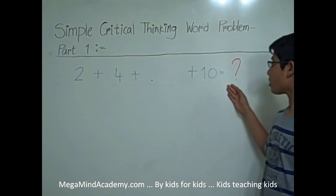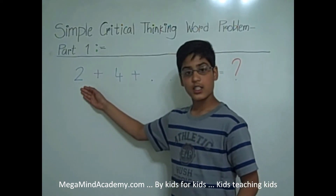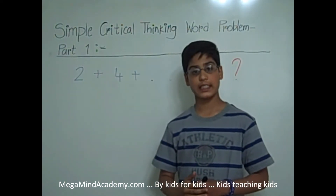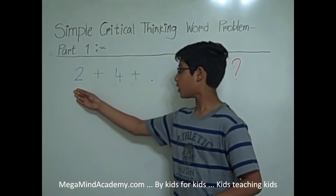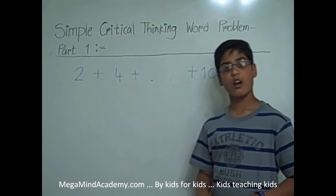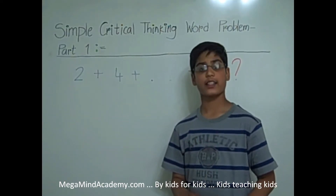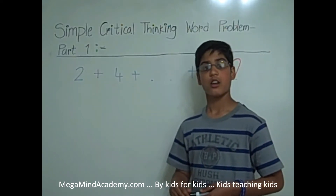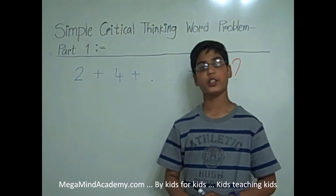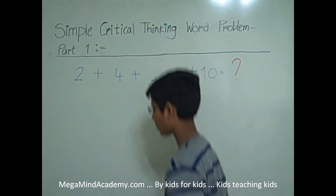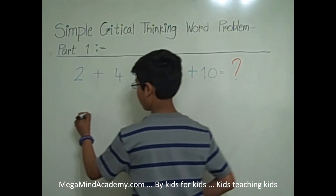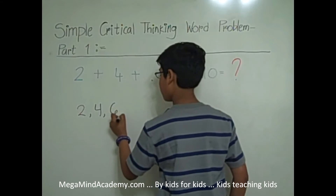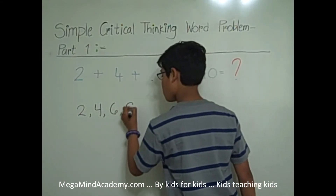In this problem, you can see that the smallest number is 2 and the largest number is 10. You can also see that all the numbers we are adding, like 2, 4, and 10, are even. So to find what the numbers we are adding are, we need to find all the even numbers between 2 and 10, including 2 and 10. They are 2, 4, 6, 8, and 10.